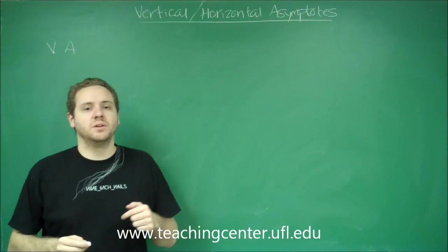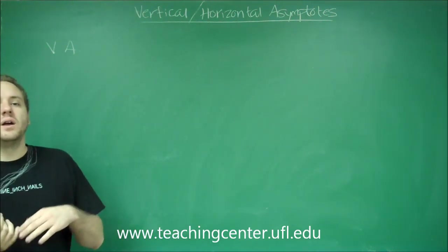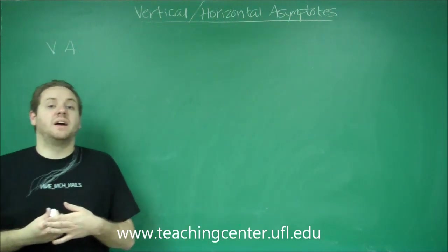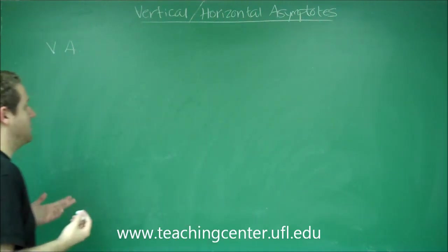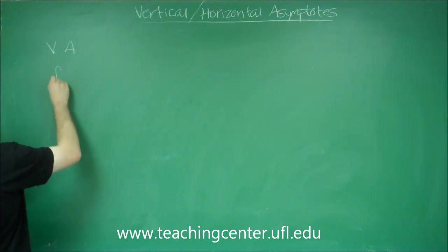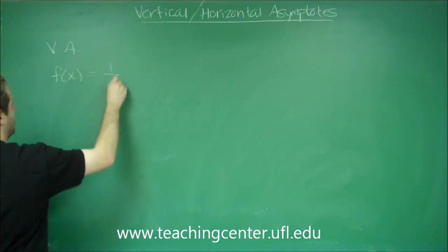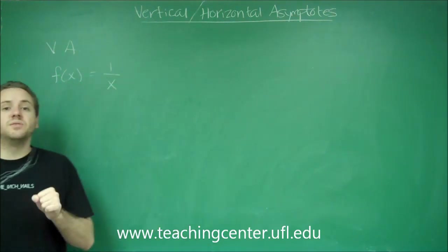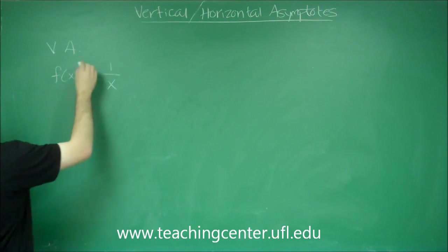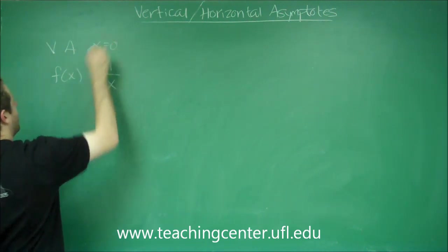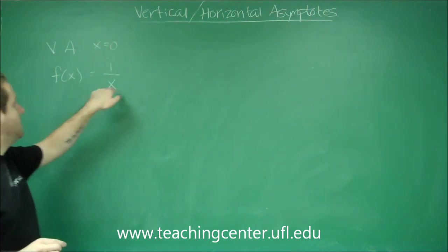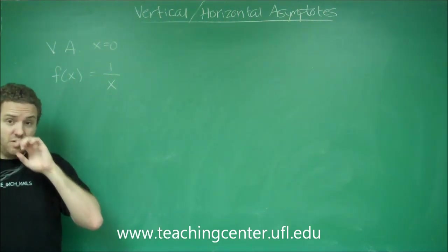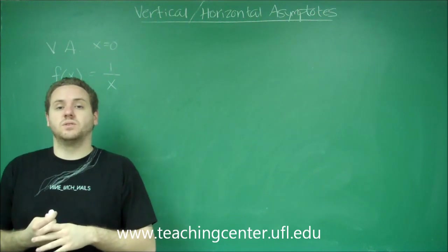So a vertical asymptote is whenever you have a function and you're dividing by zero and you can't cancel that out algebraically in any way. So for example, the easiest one to do is if you have the function f of x equals one over x. This has a vertical asymptote at x equals zero. Because if you plug in zero for x, you would be dividing by zero and the numerator is not also zero. That tells you it's a vertical asymptote.